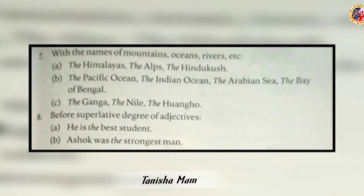'The' is used with names of mountains, oceans, rivers, and seas — The Himalayas, The Hindukush, The Pacific Ocean, The Indian Ocean, The Arabian Sea, The Bay of Bengal, The Ganga. 'The' is also used before the superlative degree of adjectives, as in 'the best student.'